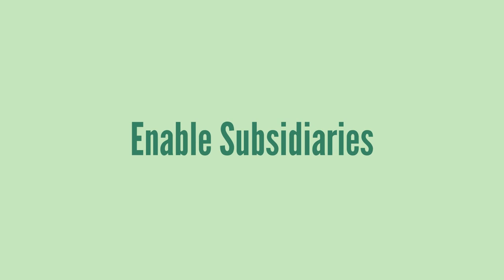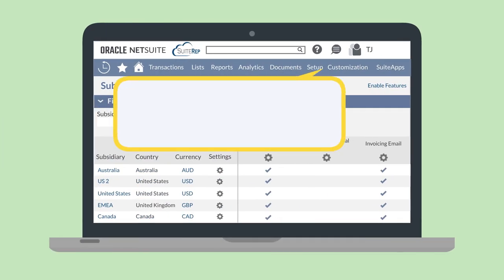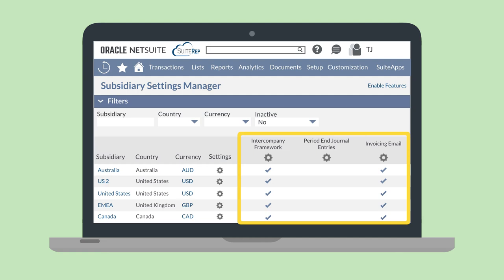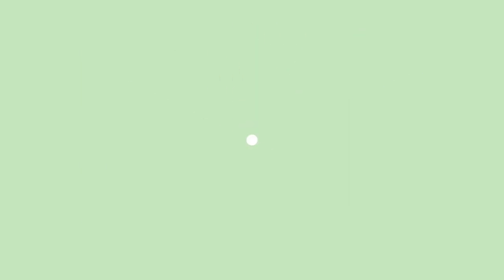Next, you'll need to enable the subsidiaries you want period end journal entries to apply to. To do that, navigate to Setup > Company > Setup Tasks > Subsidiary Settings Manager. On the Subsidiary Settings Manager page, you'll see a list of all the subsidiaries in your account, and to the right you'll see several features that you can enable for each subsidiary.